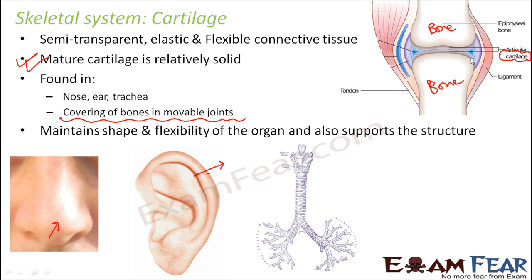This is a bone, it is covered by a cartilage, and this is the joint. At the joint area, in between the two bones, when you have cartilage there is some flexibility because the cartilage can be moved since it is flexible and elastic. Due to the presence of cartilage, which is softer than the bone, the movements are also allowed.